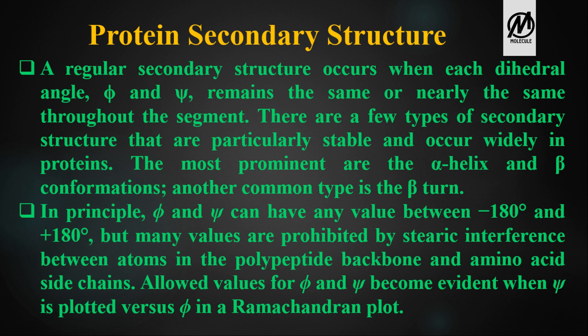In principle, phi and psi can have any value between minus 180 and plus 180 degrees, as space constitutes a complete 360-degree angle. However, many values are prohibited by steric interference between atoms in the polypeptide backbone and the amino acid side chains. Allowed values of phi and psi become evident when psi is plotted versus phi in the Ramachandran plot.